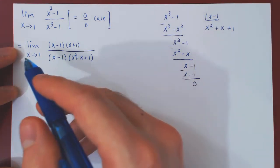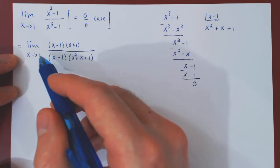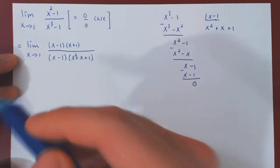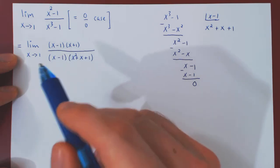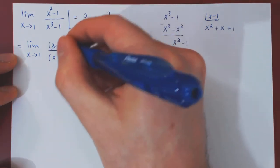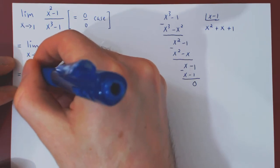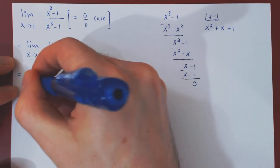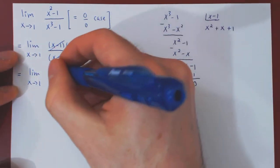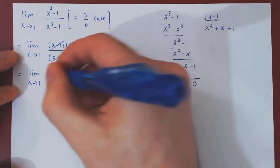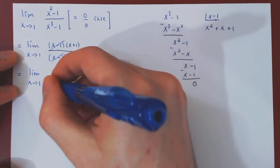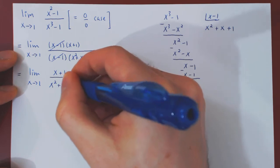And now we are essentially done. As x approaches 1, x is very close to 1, but not exactly 1. So x minus 1 is not exactly 0. So we can cancel. So we're left with the limit as x approaches 1 of x plus 1 over x squared plus x plus 1.